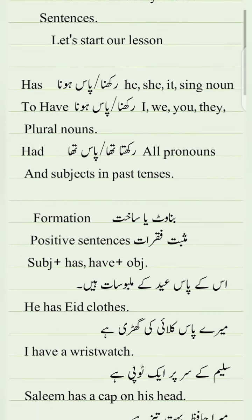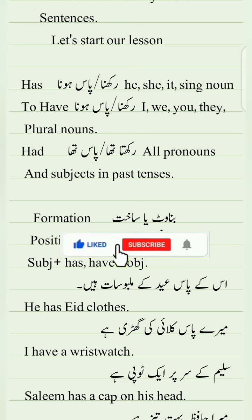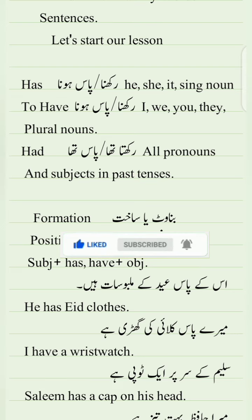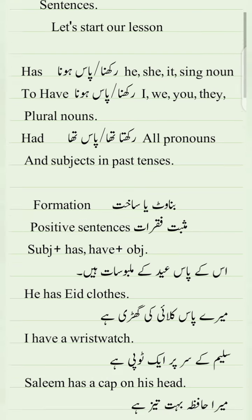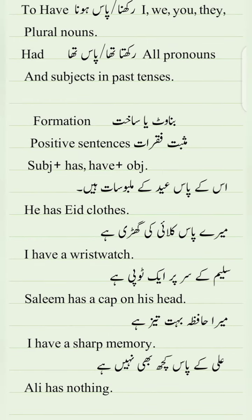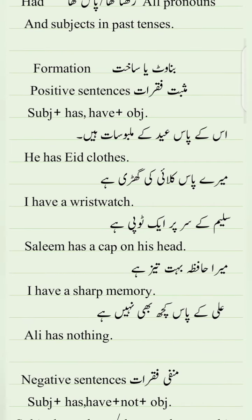Formation — binawat ya saakht — in positive sentences: Subject, then 'has' or 'have', then object. For example: 'He has his clothes' — mere paas kalai ki ghadi hai — 'I have a wrist watch.' Salim ke sar par ek topi hai — 'Salim has a cap on his head.'